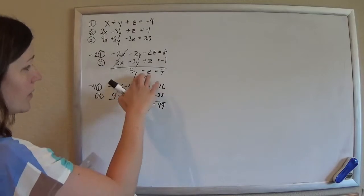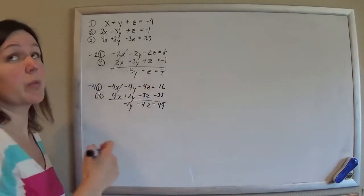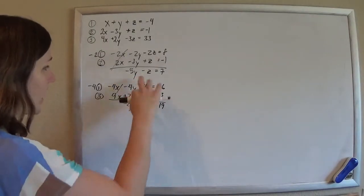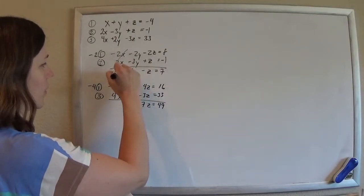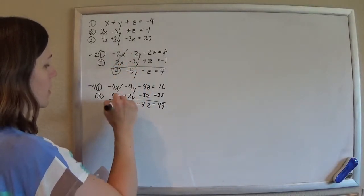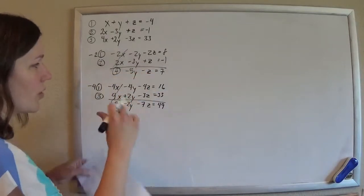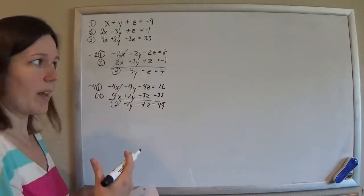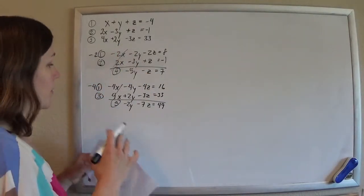And so now I have these two equations with two unknowns, which we're much happier with, right? I can do that. If I just saw this equation, I'll call it equation 4, and this equation, I'll call it equation 5. If you just saw those two without anything else, you'd be like, yeah, that's a baby problem. I can do that.